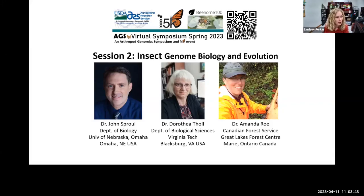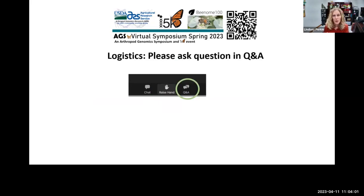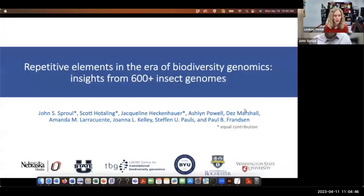You can see our three great speakers on screen today. Before I introduce our first speaker, Brad has reminded me that if you want to ask a question, please use the Q&A — it's different from the chat. Please use the Q&A and not the chat function if you want me to see your question. Our first speaker today is Dr. John Sproul, assistant professor at the University of Nebraska Omaha. John is an evolutionary biologist investigating how repetitive DNA shapes the evolution of genomes and species. His talk today is entitled 'Repetitive Elements in the Era of Biodiversity Genomics: Insight from 600-Plus Insect Genomes.'